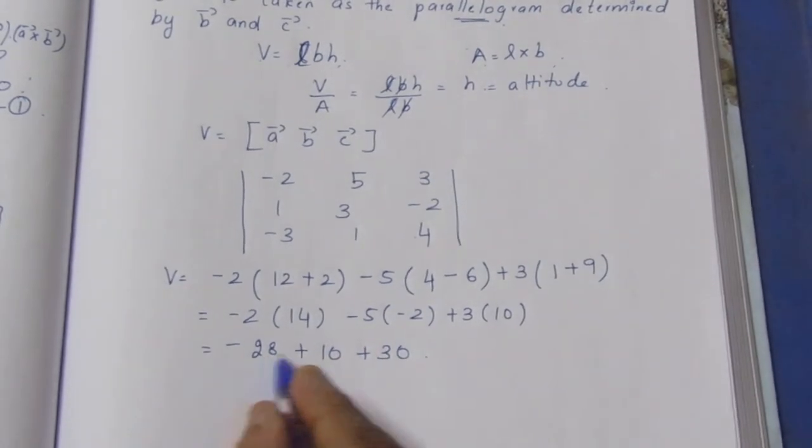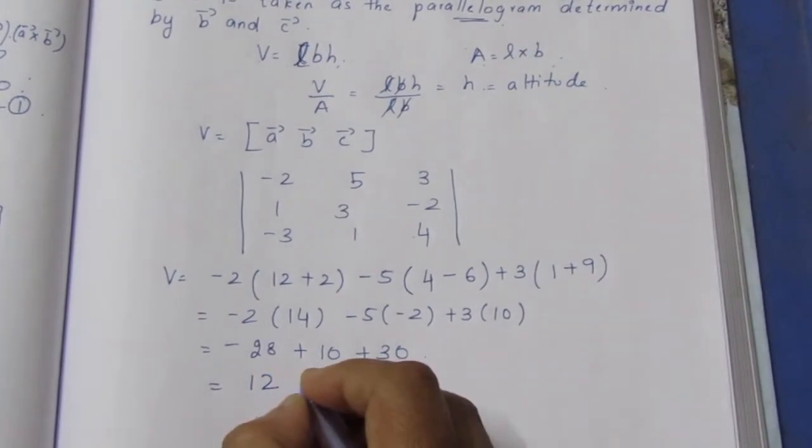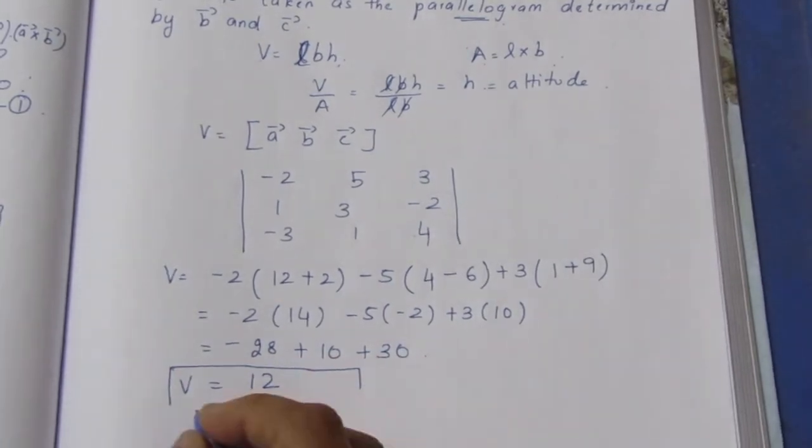Adding these: -28 + 10 is -18, plus 30 gives 12. The volume is 12 cubic units.